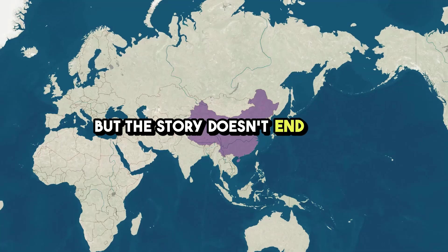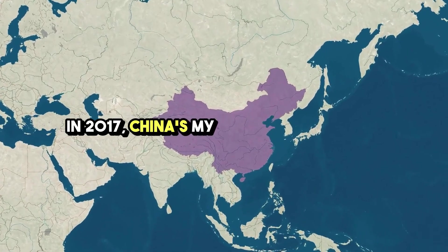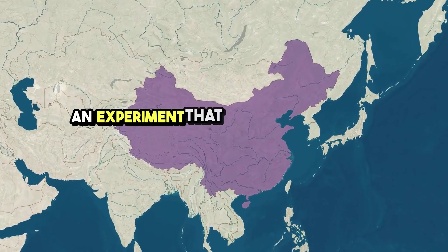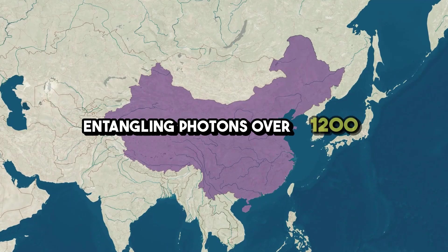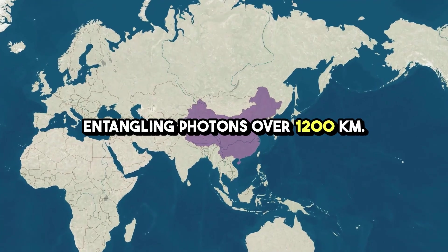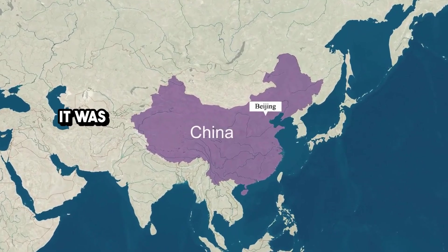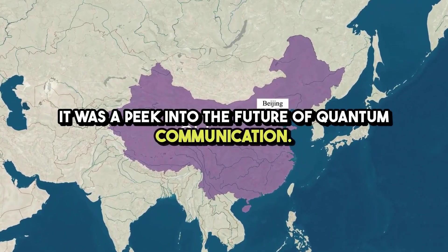But the story doesn't end there. In 2017, China's Mishia satellite conducted an experiment that shattered distance records, entangling photons over 1,200 kilometers. This wasn't just an impressive feat. It was a peek into the future of quantum communication.